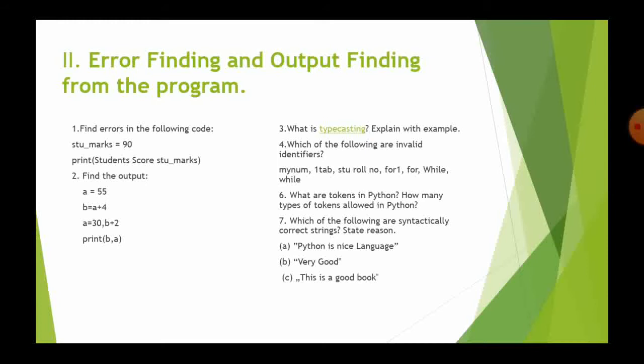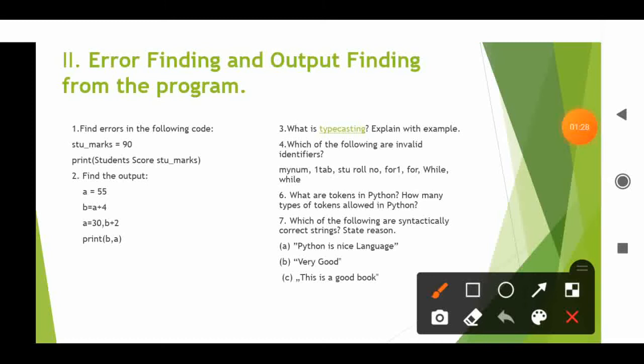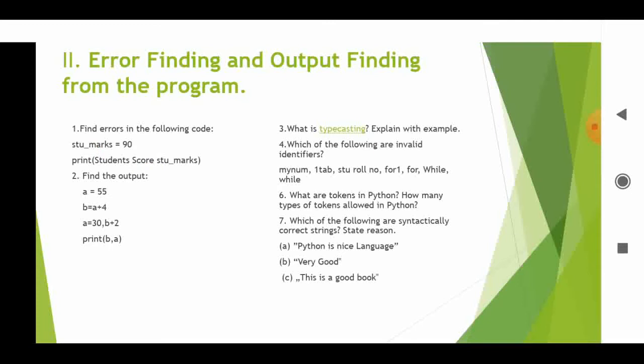We will see the second section — error finding and output finding from the program. Find the errors in the following code: student_stu_marks equal to 90, print students score students mark. The error here is a syntax error because they have missed the quotation for student score, and the comma is also missing. Also, students-marks uses a hyphen which is a syntax error in the print statement.